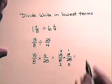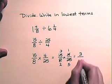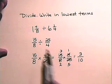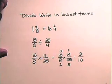Now we multiply numerators: 3 times 1 is 3. We multiply denominators: 2 times 5 is 10. So 1 and 7/8 divided by 6 and 1/4 has a result of 3/10. In this section, we have looked at several examples of multiplication and division of fractions and mixed numbers. Take these and practice and do some on your own.